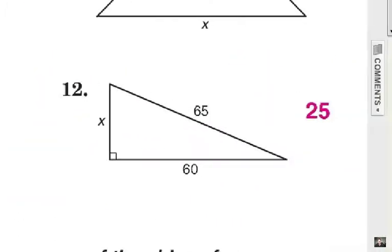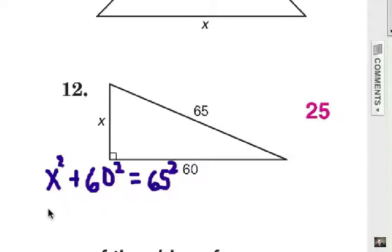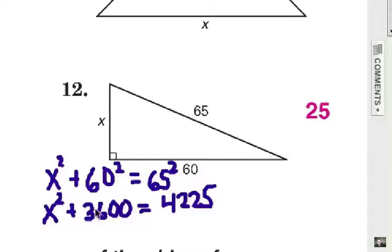And finally number 12, x is a leg, 65 is a hypotenuse and 60 is the other leg. We substitute these into the Pythagorean theorem and get x squared plus 60 squared equals 65 squared. So x squared plus 3600 equals 4225. Of course we need to subtract 3600 from each side.